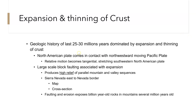In the last 25 to 30 million years, the North American plate has been dominated by extensive expansion and thinning of the crust. The North American plate came into contact with the northwestward-moving Pacific plate after the disappearance of the Farallon plate, and the relative motion became tangential, stretching the southwestern North American plate. We see large-scale block faulting associated with expansion, producing those high-relief parallel mountain-valley sequences from the Sierra Nevada east to the Nevada border. Faulting and erosion expose rocks billions of years old in mountains only a few million years old.